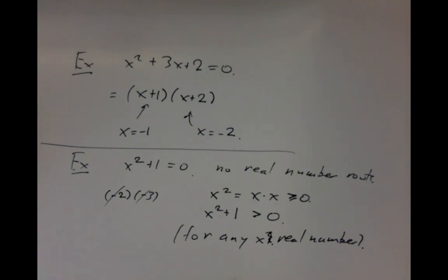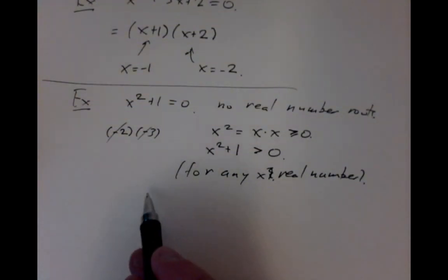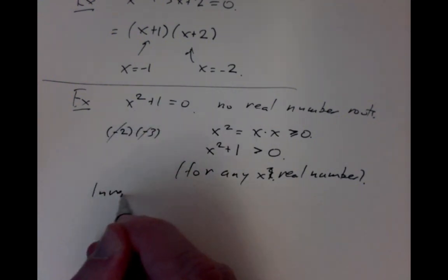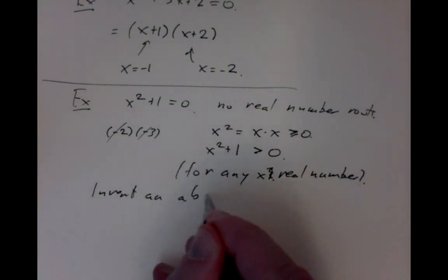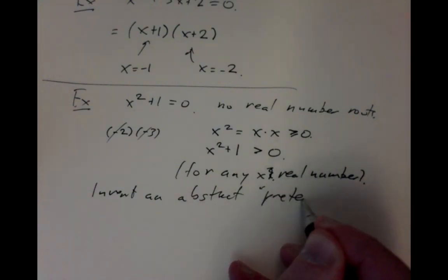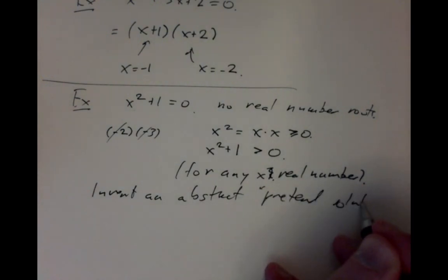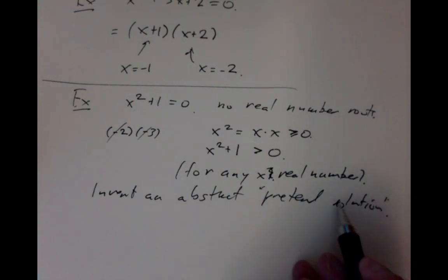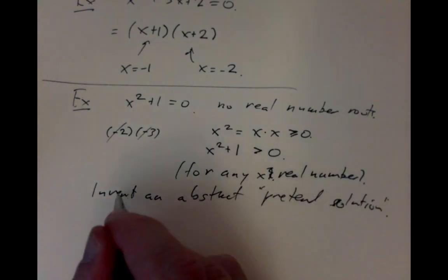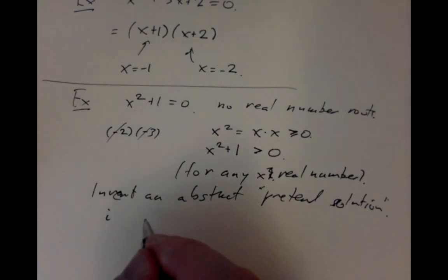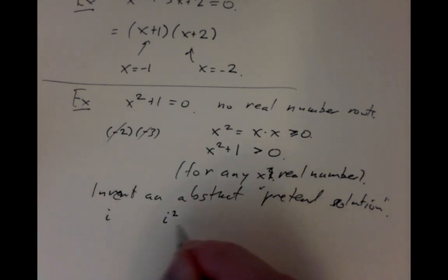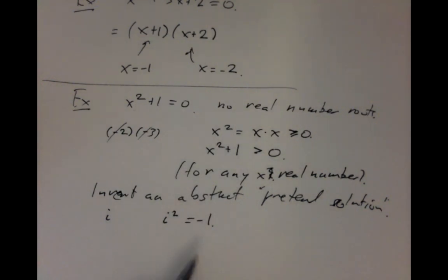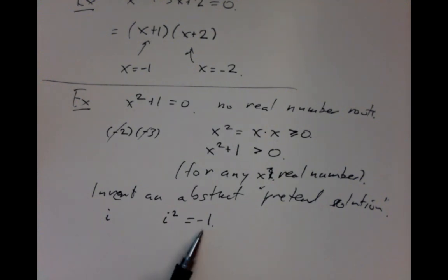In the Renaissance, Cardano was led to the idea of inventing a formal solution to this equation — an abstract, pretend solution. We write down a symbol called i, and we require that every time we multiply i by itself, we replace i² with minus 1. So we manipulate i as if it were just an abstract variable, but every time we hit two i's multiplied together, we substitute minus 1 instead.